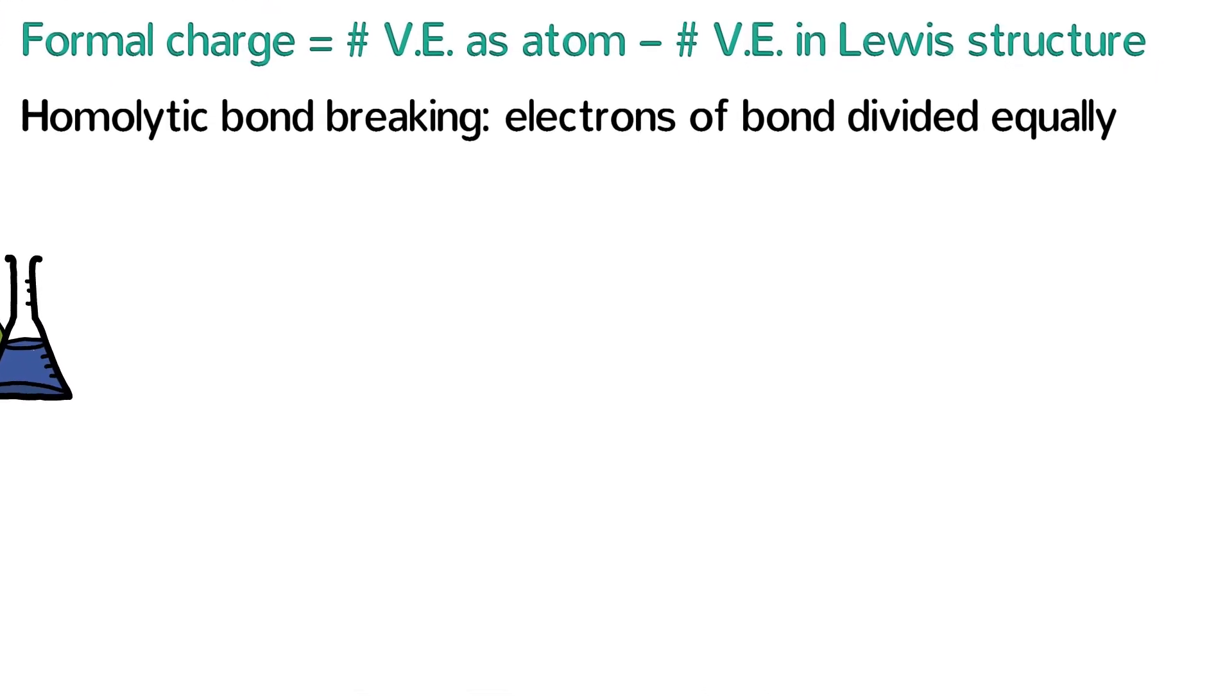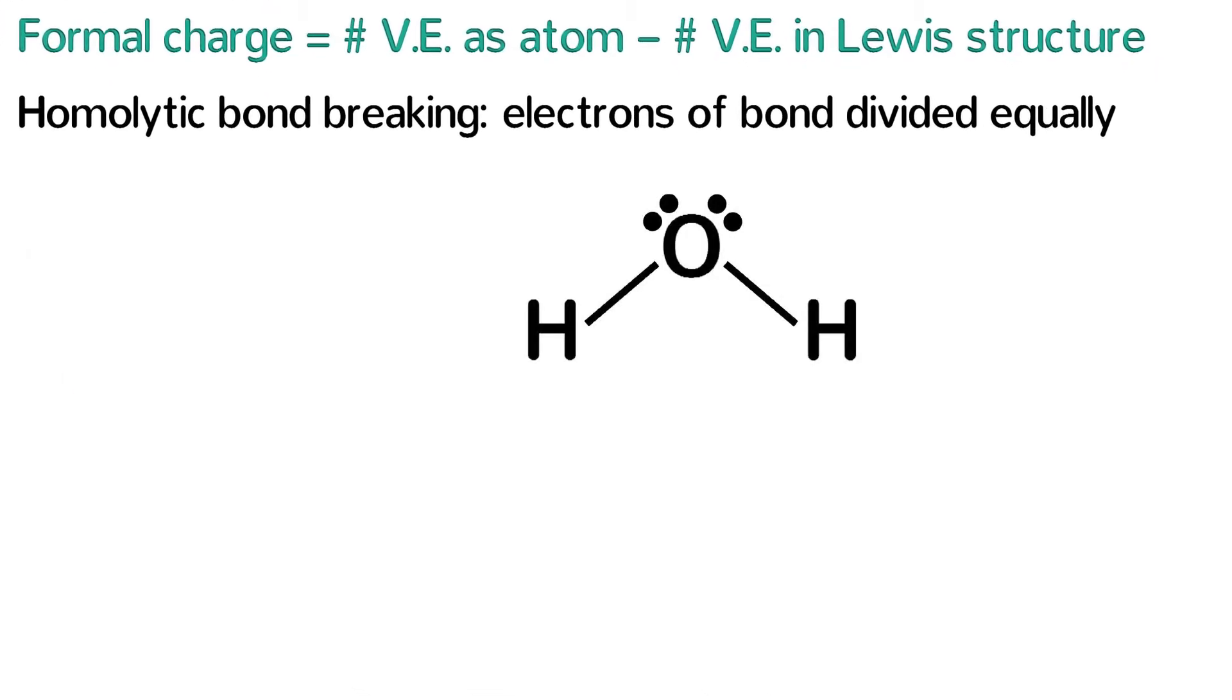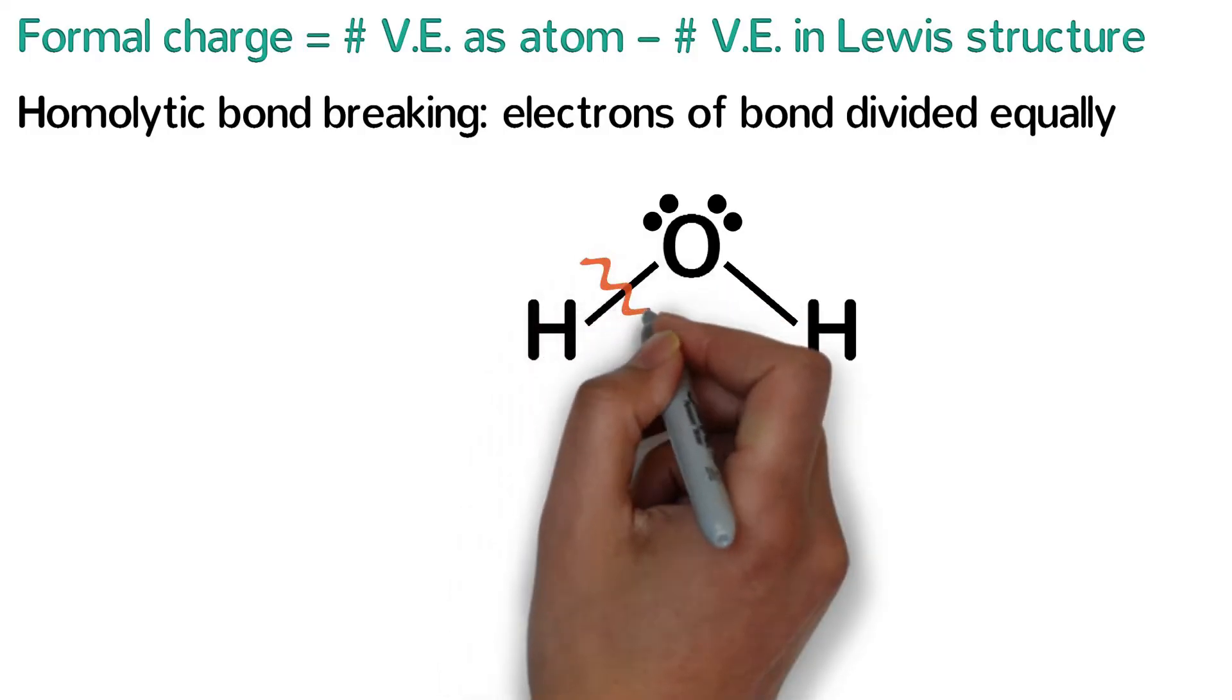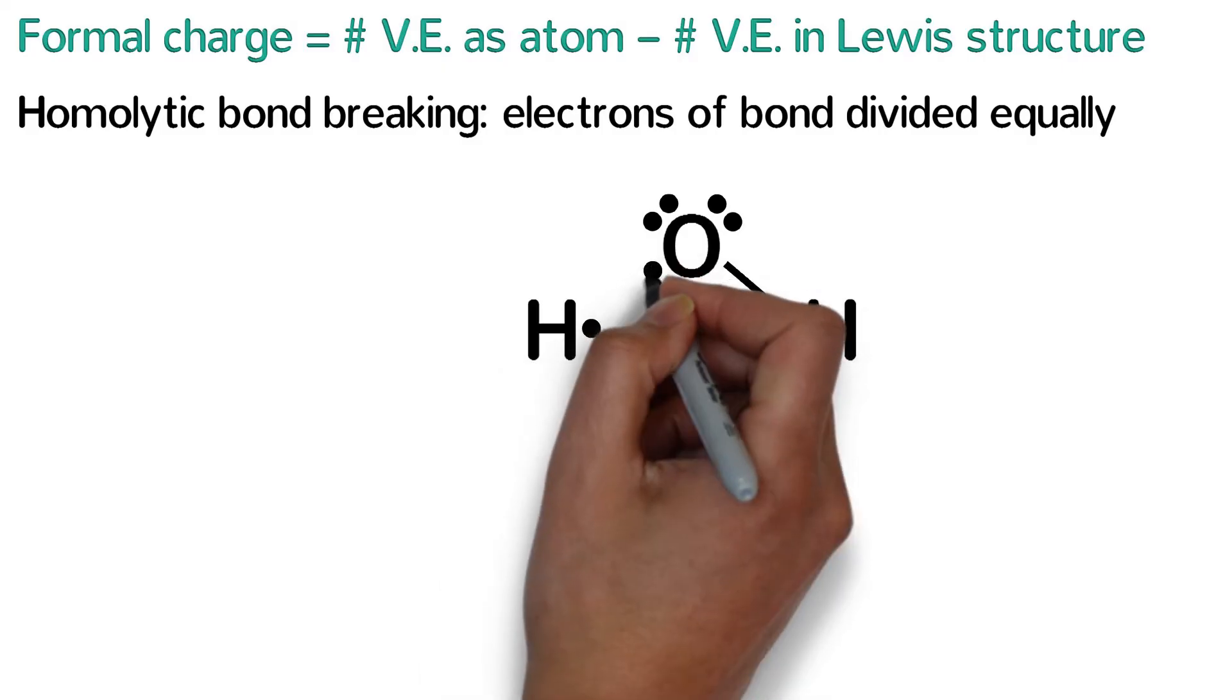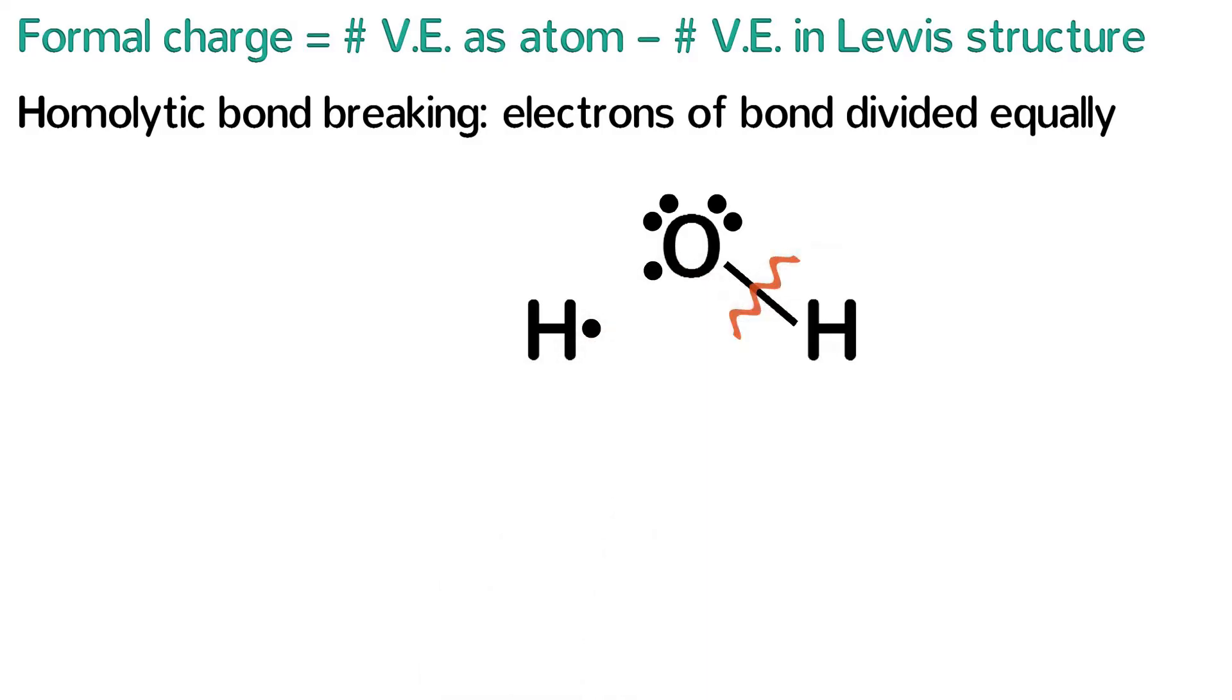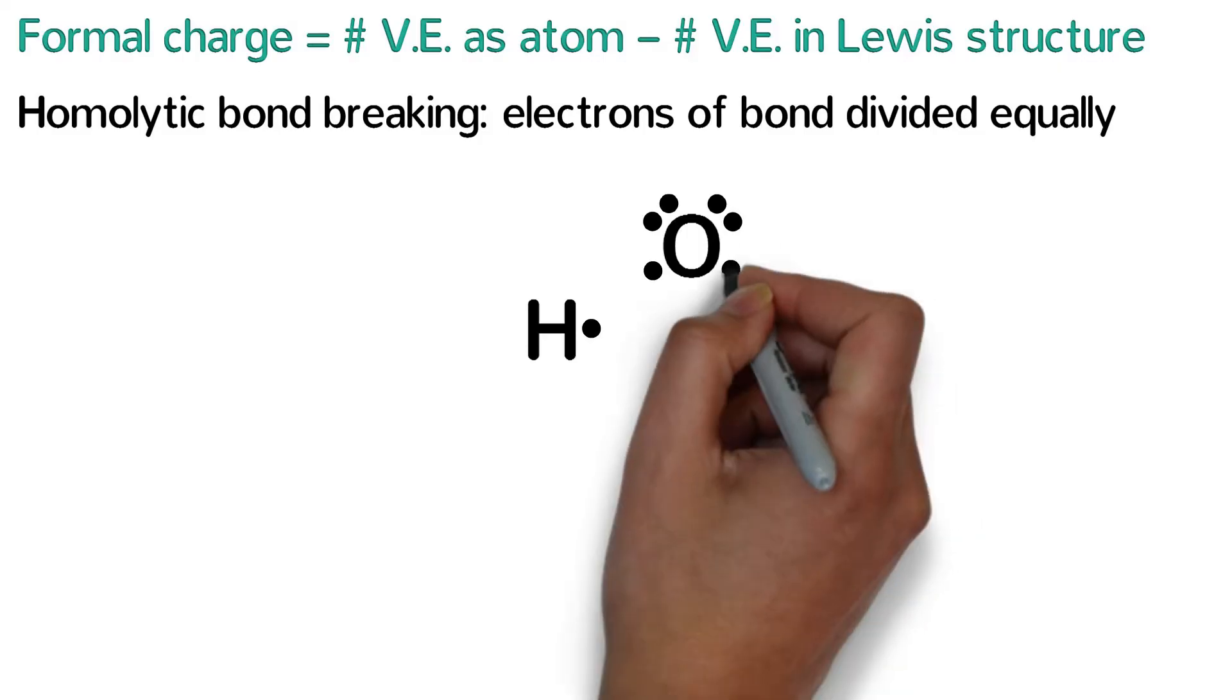Let's see how this works for water, which has the following structure. If we break the bonds homolytically, we take the two electrons from this bond and give one to hydrogen and one to oxygen. We do the same to the other bond and end up with electrons distributed like this.